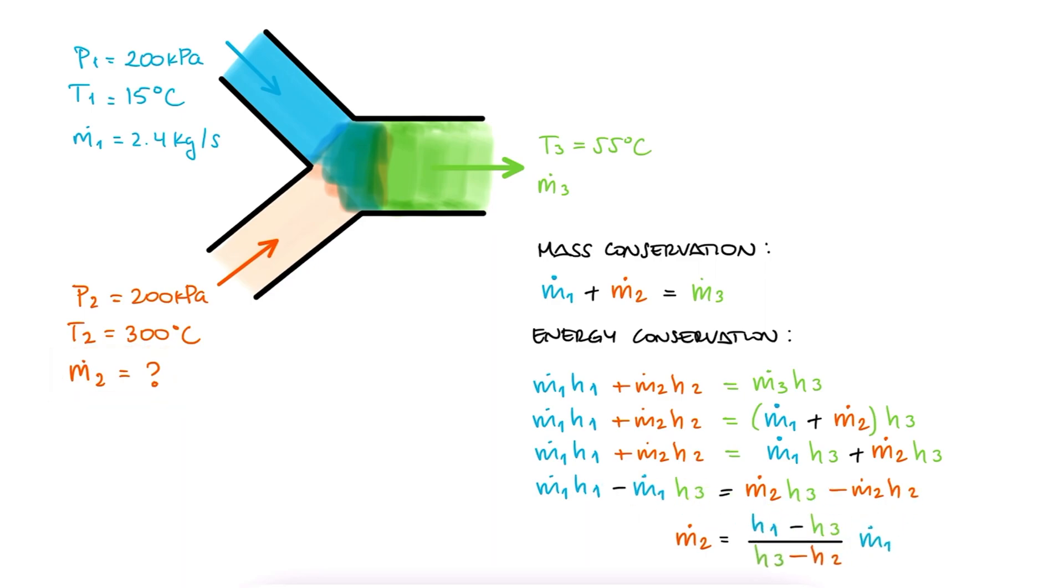This expression shows us that we need to find the enthalpy values for 1, 2, and 3. Inlet 1 is liquid water, and at 55 degrees Celsius, so is what we get at the exit at 3.